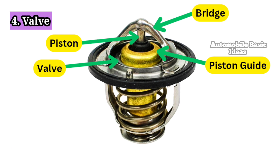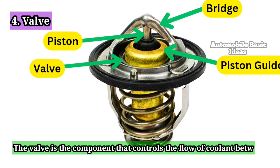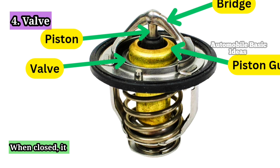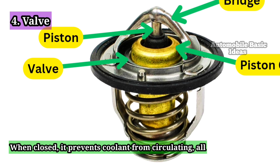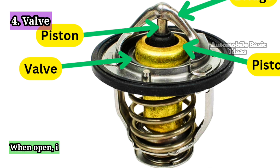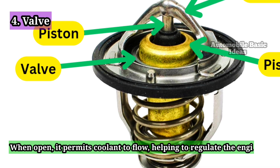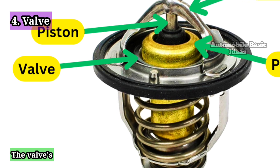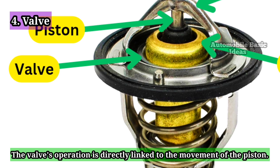Valve: The valve is the component that controls the flow of coolant between the engine and the radiator. When closed, it prevents coolant from circulating, allowing the engine to warm up quickly. When open, it permits coolant to flow, helping to regulate the engine's temperature. The valve's operation is directly linked to the movement of the piston.